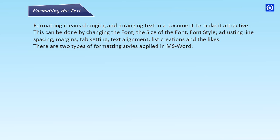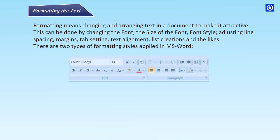Formatting the text. Formatting means changing and arranging text in a document to make it attractive. It can be done by changing the font, the size of the font, font style, adjusting line spacing, margins, tab setting, text alignment, list creations, and the likes. There are two types of formatting styles applied in MS Word.